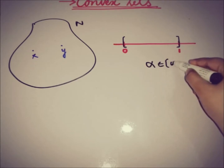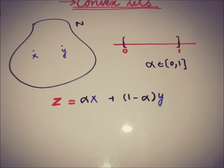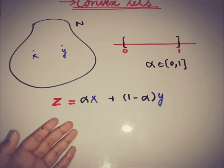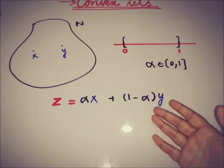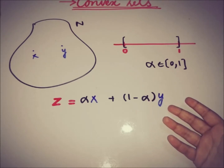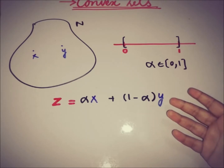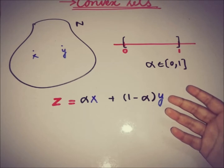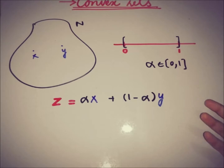Alpha belongs to the interval zero to one. The set of points of the form z equals alpha x plus one minus alpha times y — where alpha is a scalar, x and y are points of the linear space — this type of point z is called the line segment from x to y, where x and y are both endpoints.